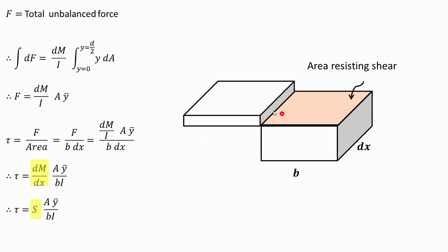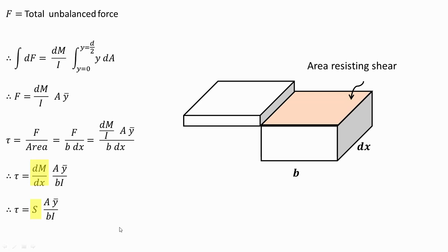The shear stress induced due to sliding of the layers equals this force divided by the area, where area equals B·dx. So shear stress = (dM/I)·A·Ȳ divided by B·dx, which simplifies to (dM/dx)·(AȲ)/(BI). Since dM/dx is the rate of change of moment with respect to distance x, that is nothing but the shear force V. Therefore, shear stress equals V·AȲ divided by B·I. The shear force V is calculated from the reactions acting on the beam, giving us the shear stress in Newton per mm² or MPa.